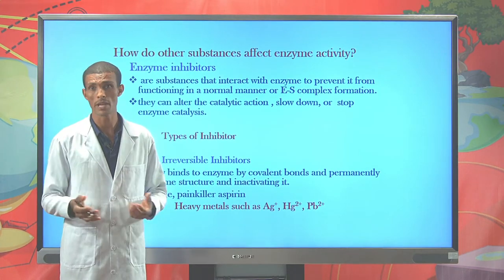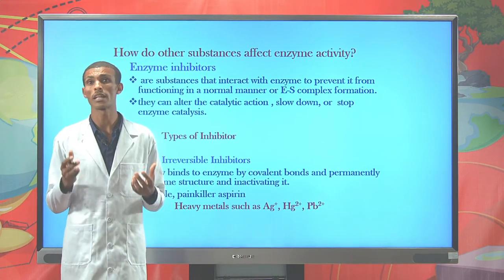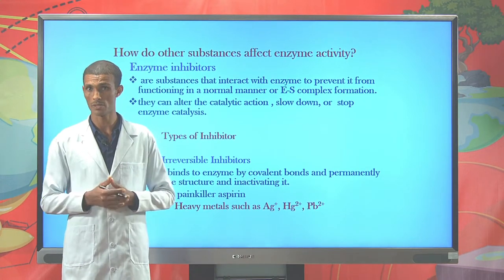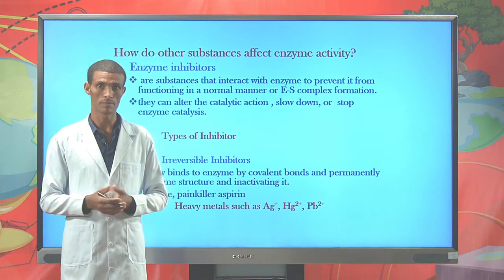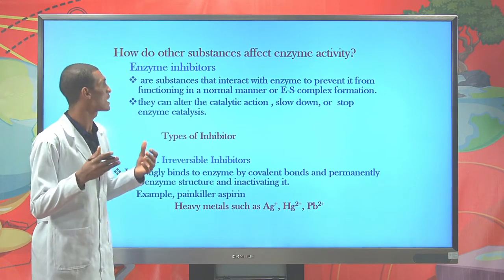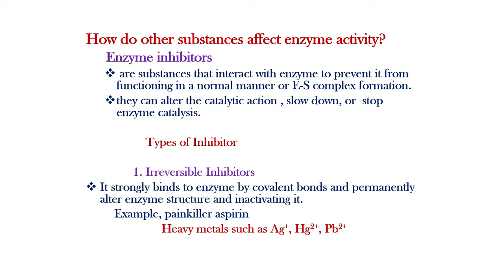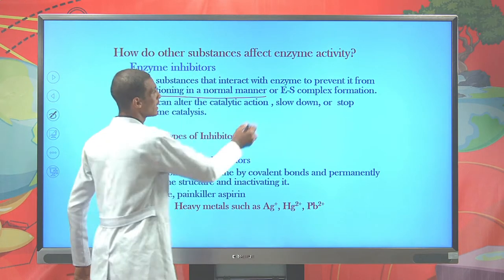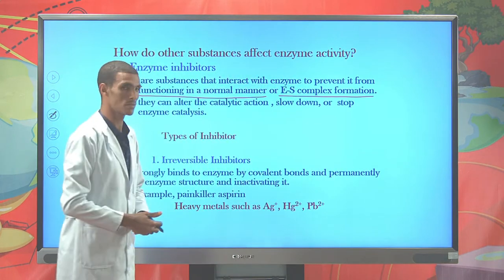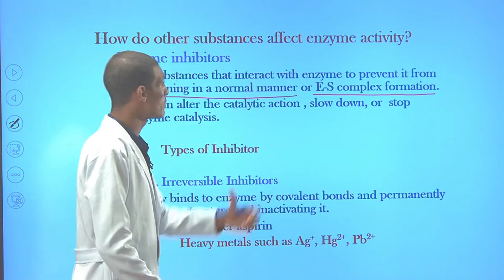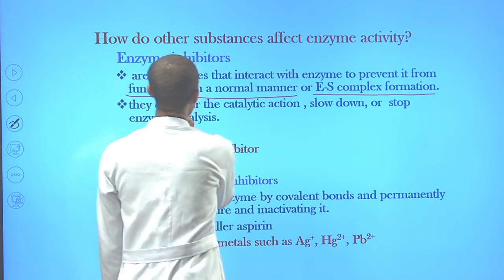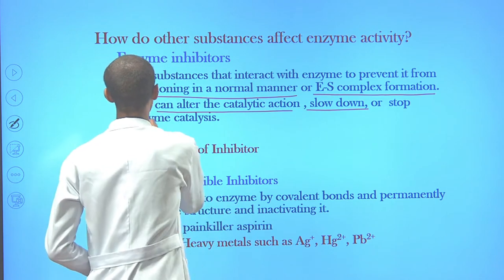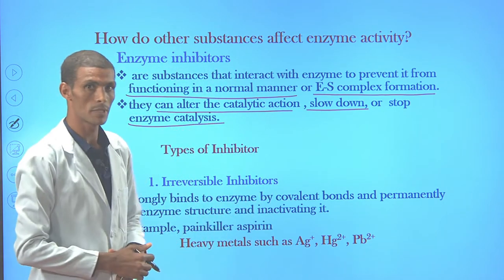Not only temperature, pH, and substrate concentration — there are other substances that affect enzyme action or the rate of enzyme activity to form the enzyme-substrate complex. These are termed inhibitors. When we say inhibitor, they are substances that combine with an enzyme to prevent it from functioning in a normal manner, or enable the enzyme not to form the enzyme-substrate complex. They can also totally alter an enzyme's catalytic activity, slowing the rate or totally stopping the enzyme catalytic system.